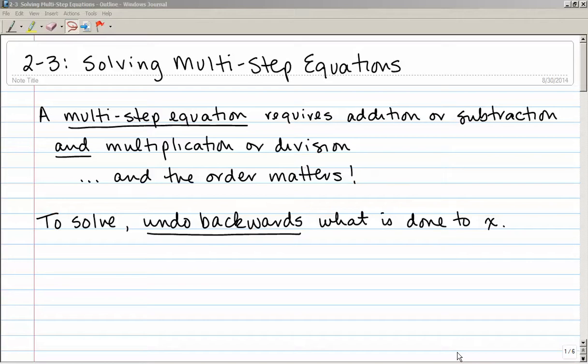Section 2-3 is on solving multi-step equations. A multi-step equation requires that we use addition or subtraction and multiplication or division in order to solve the equation. And the order that we do these operations does matter. Basically to solve, remember that means we're trying to find x, is we're going to undo backwards whatever was done to x. So let's take a look at a couple examples.